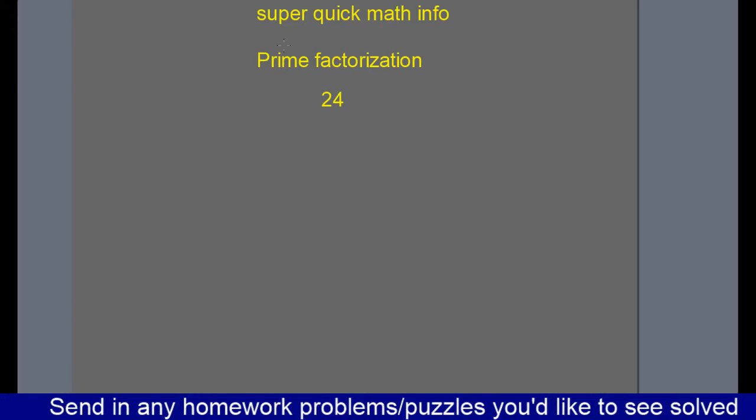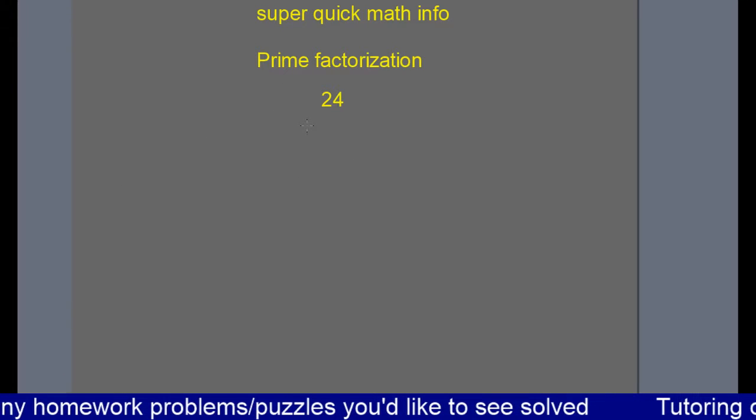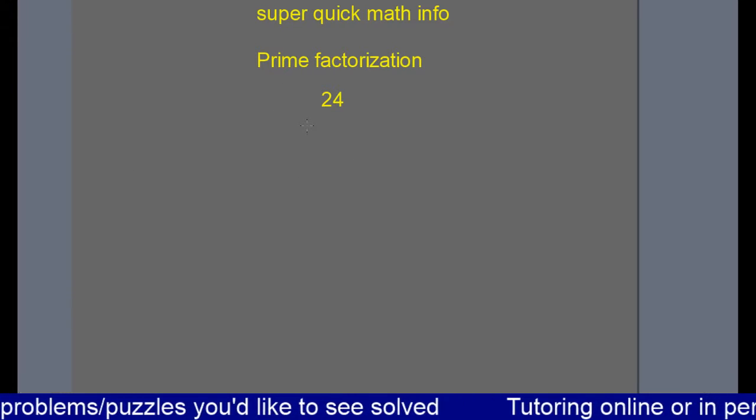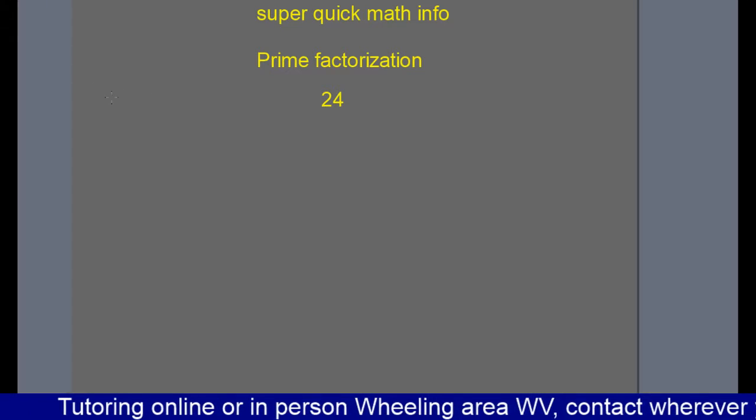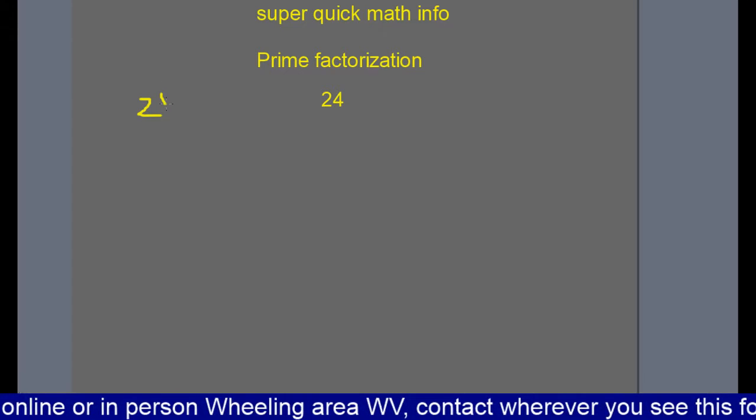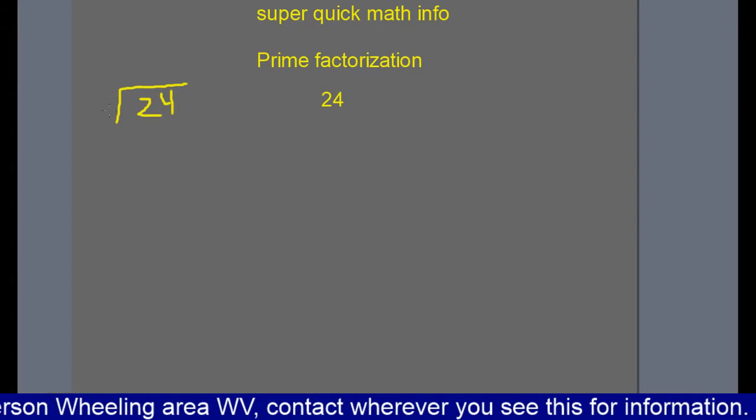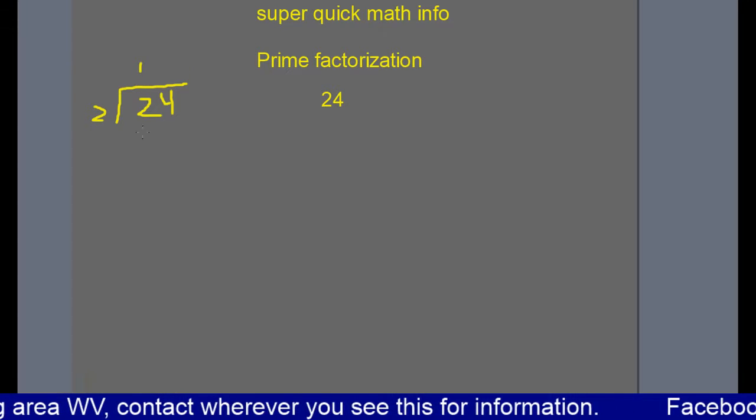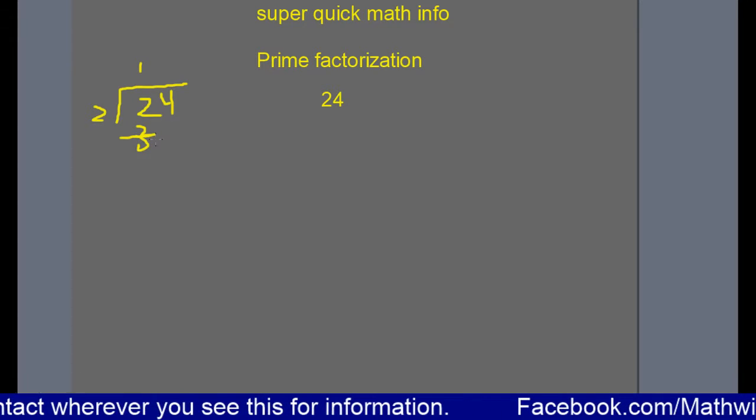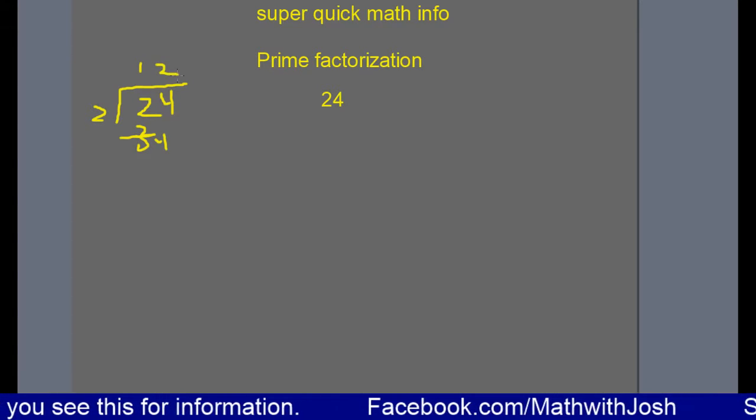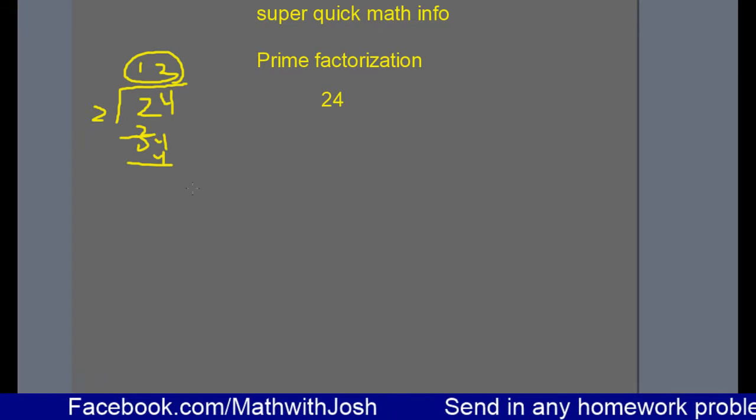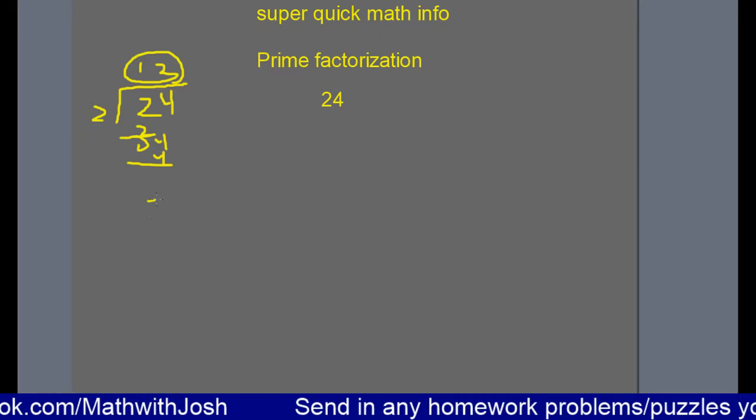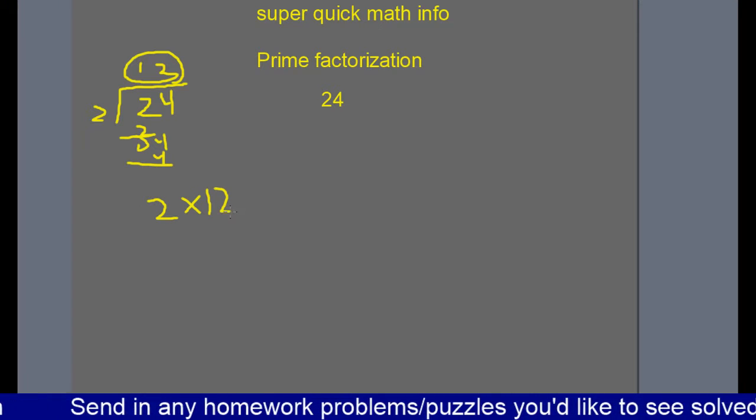First step is we need to find a factor of 24 or a multiplication problem that gets it. The first thing I know is it's an even number, so we're going to do 24 divided by 2. We know this is 1, bring the 2 down, we get a 0, bring the 4 down, 2. We see that our answer is 12. So we've realized that 24 equals 2 times 12.